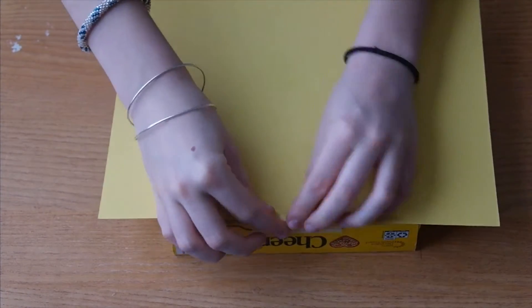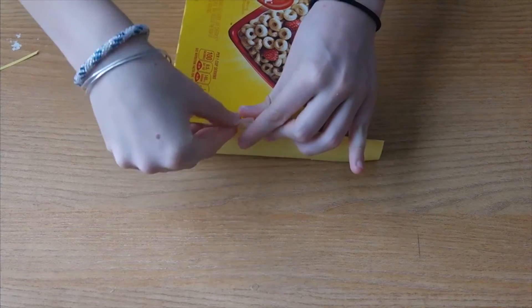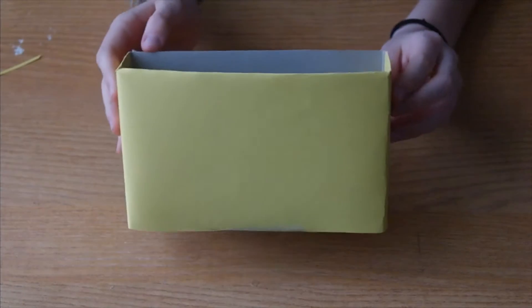Next take another box, I again used a cereal box, and make sure it's cut so it's shorter than your first box. Go ahead and cover three sides of your box again, I used yellow paper.